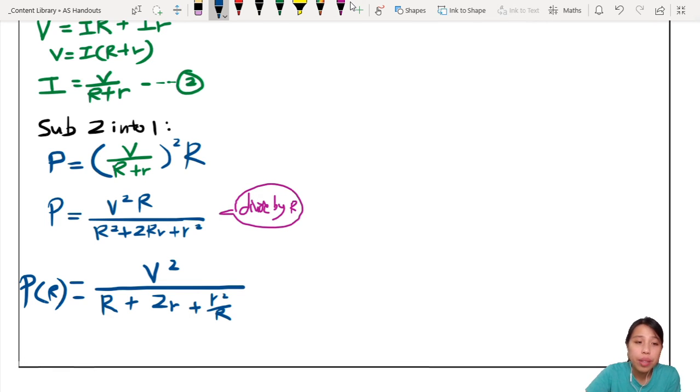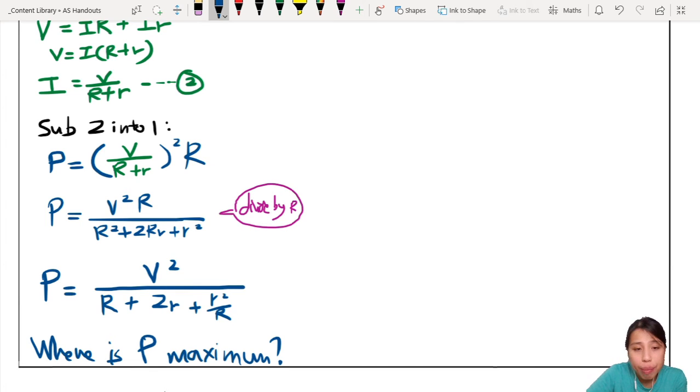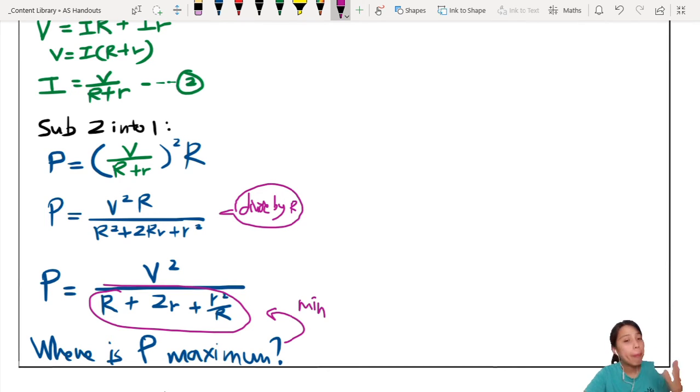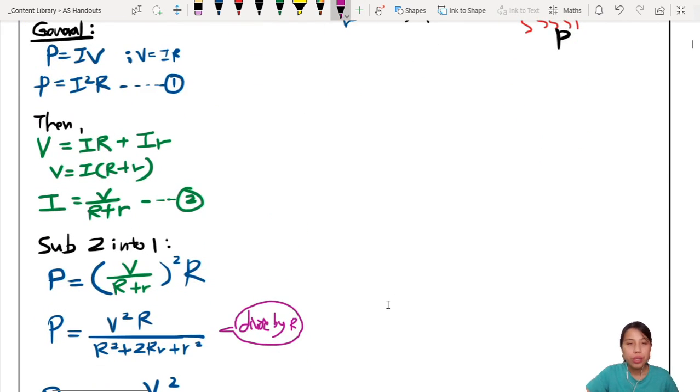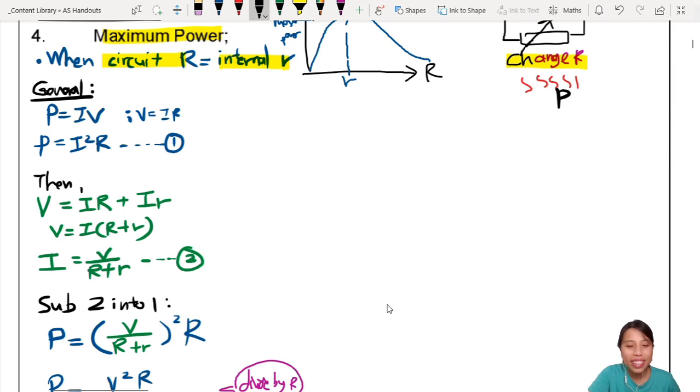Another way you can write this thing, strictly speaking, if you want to do math, is power that changes with the resistance. So this is how you write function: P(R). So R is changing here and that will affect the P. So where is P the maximum? Maximum. You kind of have to do what we call differentiation to find the maximum point. For P to be maximum, this bottom part has to be minimum, the denominator. Wherever P is maximum means the denominator must be minimum.